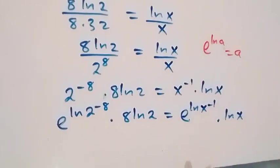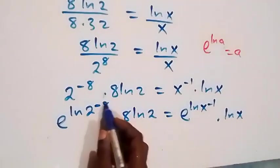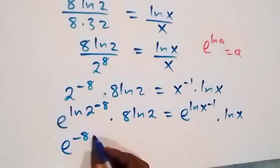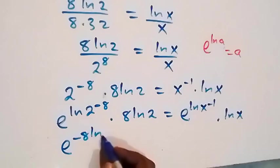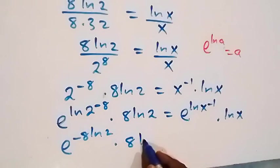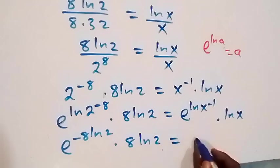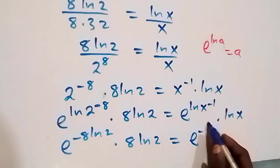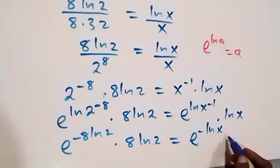This power here, from the law of logarithm, we can bring it down: we have e raised to power minus 8 ln 2, times 8 ln 2, which is equal to e raised to power minus ln x, then times ln x.